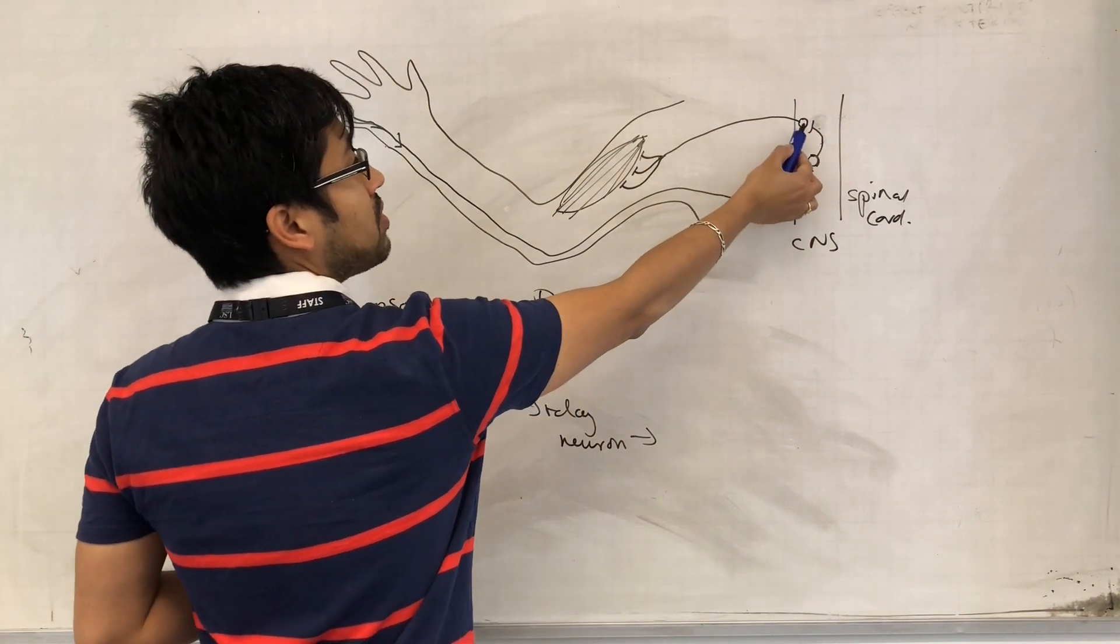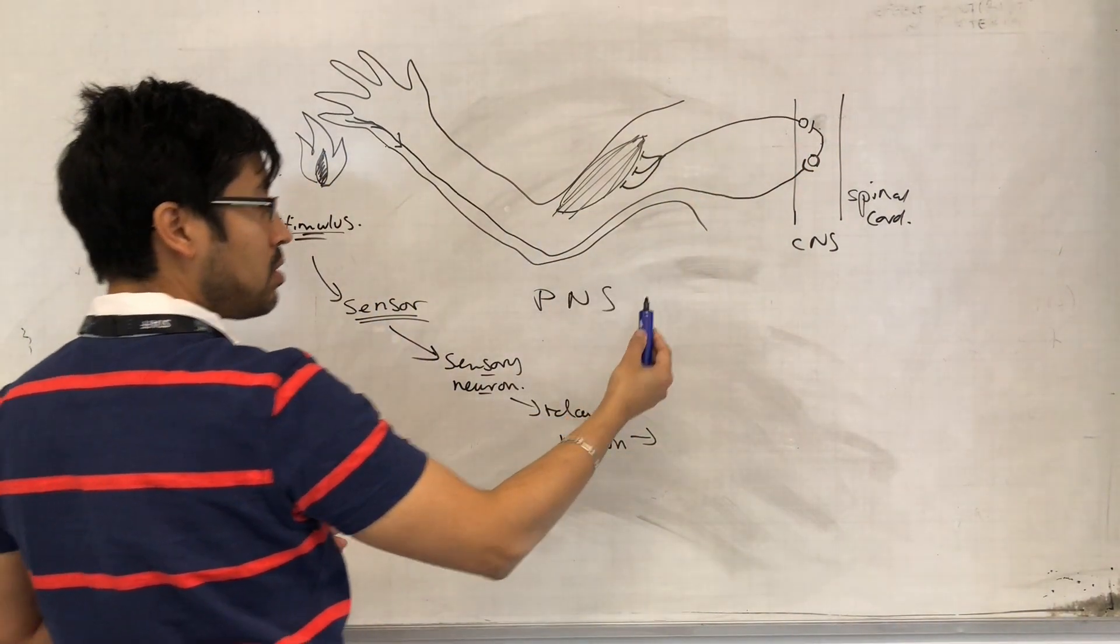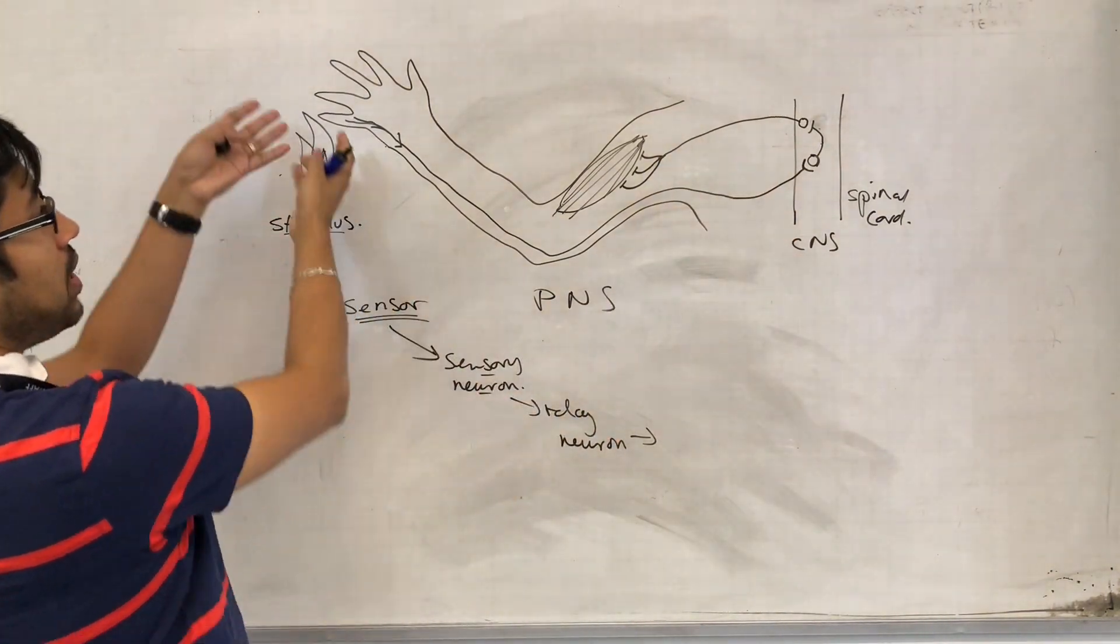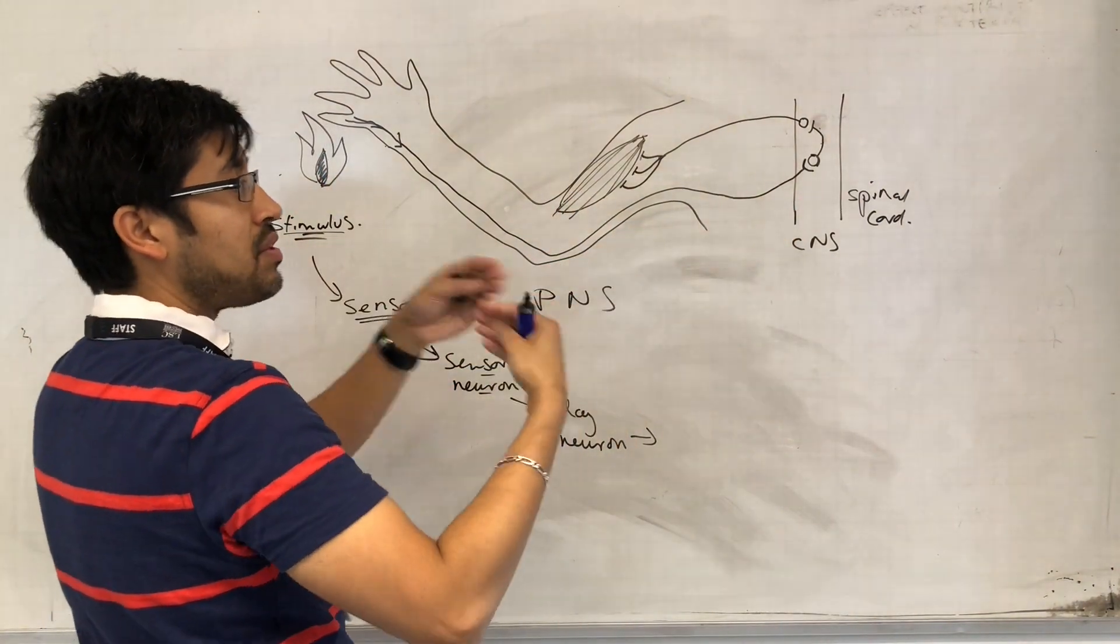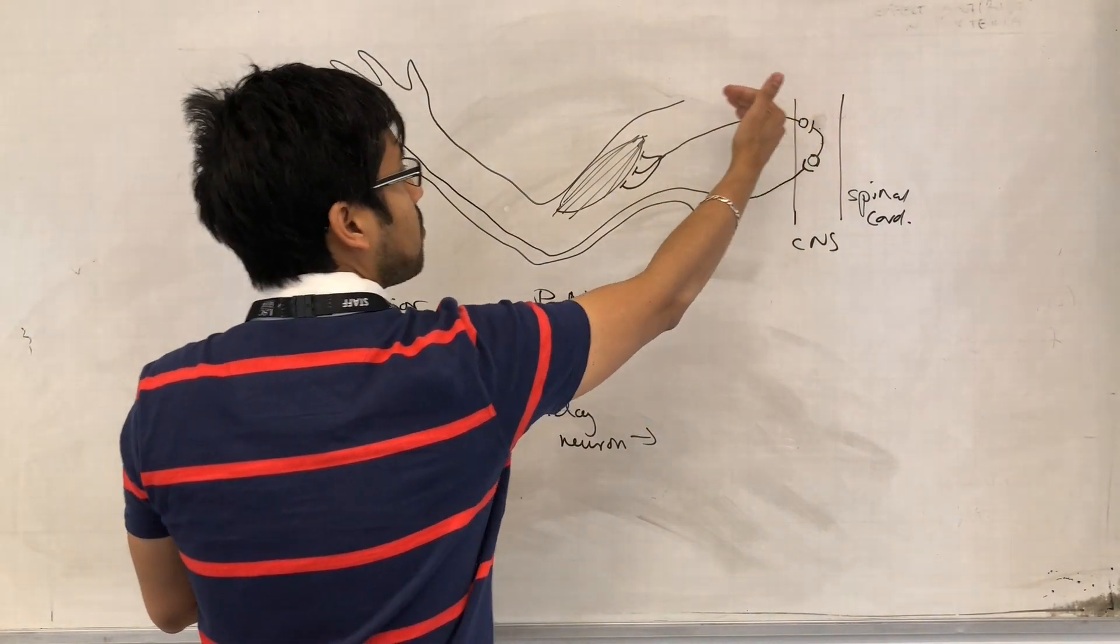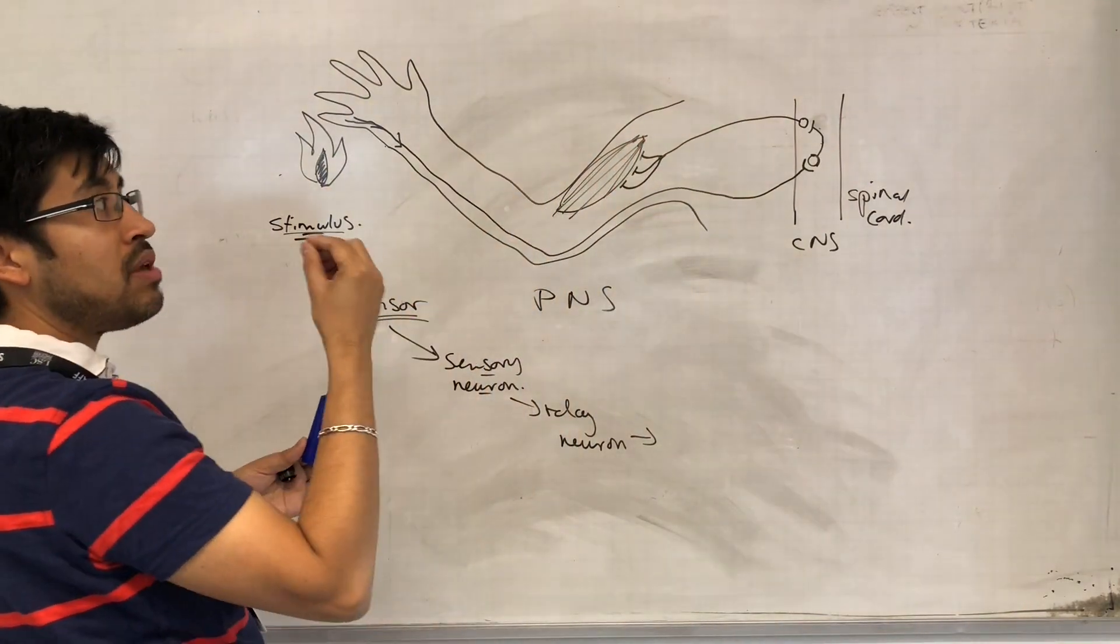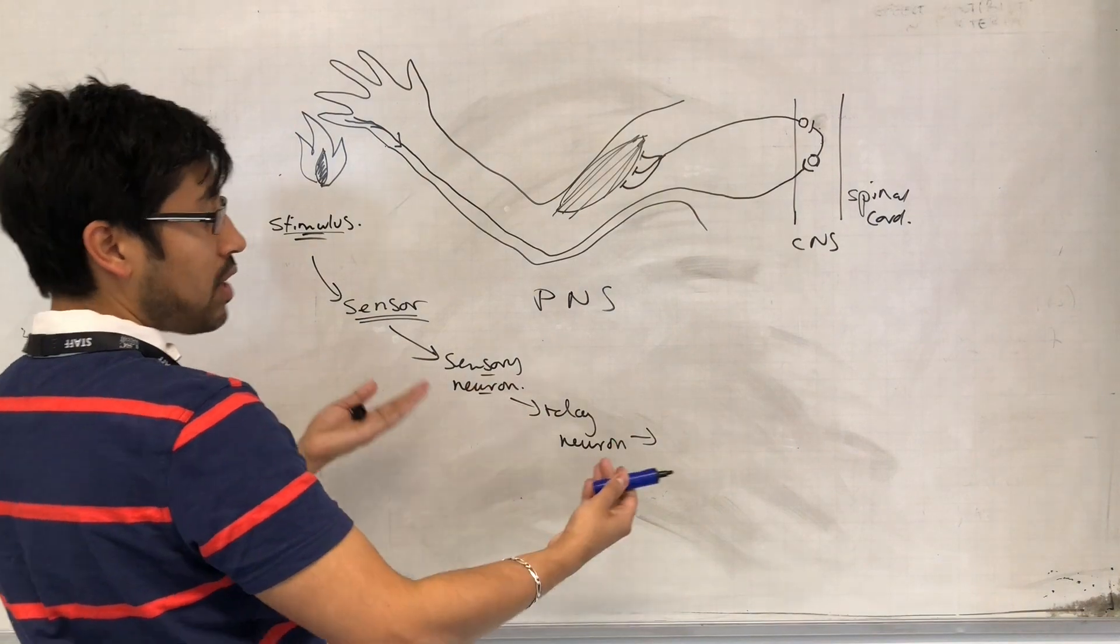And the relay neuron then results in an impulse being generated in the effector neuron. So again, part of the peripheral nervous system. Remember we talked about information goes towards the nervous system, but then once the appropriate response is kind of wired up, then the impulse needs to go back out to an effector that's going to effect the change or effect the response.